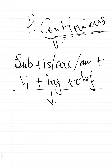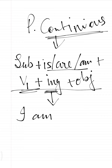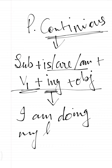Based on this formula, let us see an example. 'I' is the subject; from is/are/am we use 'am' with 'I'; then verb first form plus ing — 'do' plus 'ing' becomes 'doing.' So the sentence is: 'I am doing my homework,' where 'my homework' is the object. That is an example of present continuous tense.